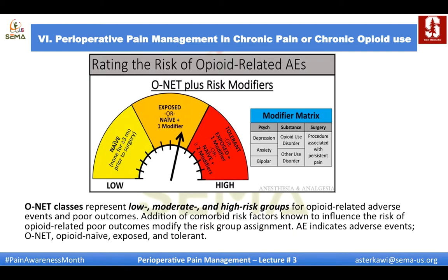For risk stratification, start with the ONET classification and then add modifier risk factors — including psychiatric, substance, and surgery-related factors. ONET classes represent low, moderate, and high risk groups for opioid-related adverse events and poor outcomes. For example, an opioid-naive patient with one modifier becomes moderate risk; an opioid-naive patient with two modifiers becomes high risk.